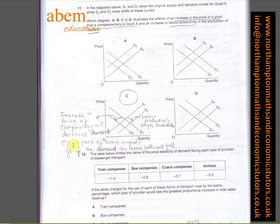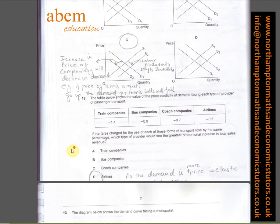Increase in the price of complementary goods will decrease demand. I've given you examples. If the prices of tennis rackets go up, then the demand for tennis balls will fall because not many people will buy tennis rackets.